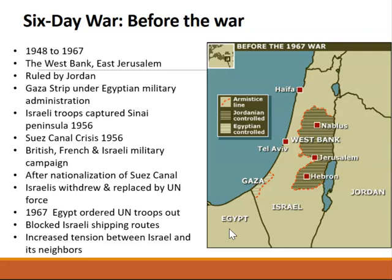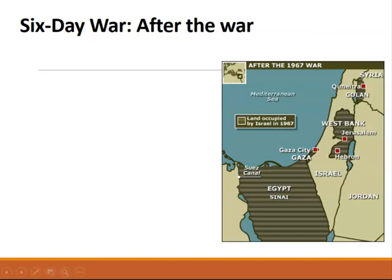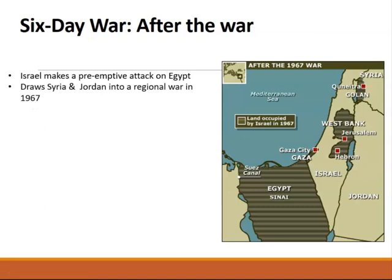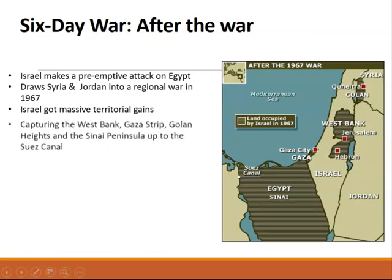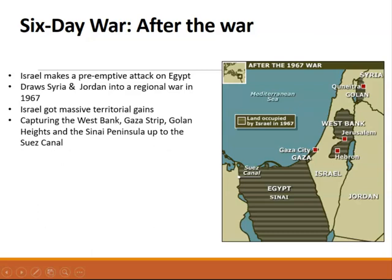Before the Six-Day War, here's what the map looks like; after the war, Israel gains a whole lot of territory. Israel made a preemptive strike on Egypt, drawing Syria and Jordan into a regional war in 1967. After six days, Israel occupied the Gaza Strip, the West Bank, the Golan Heights from Syria, and the Sinai Peninsula from Egypt — taking land from Egypt, Jordan, and Syria, decisively winning this war in six days. This created even more tensions, as the 1956 and 1967 conflicts were seen by the Arabs as aggressive acts.